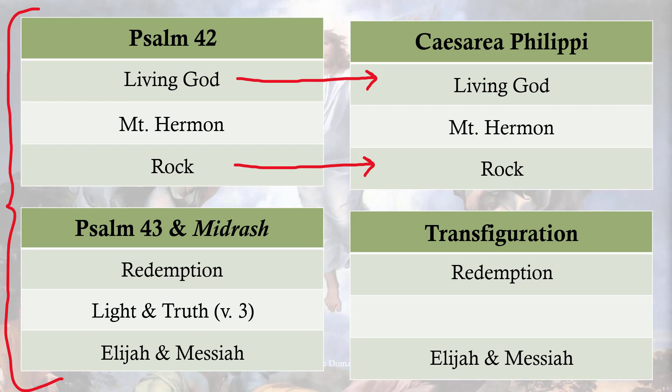All those little allusions — the way this works is: what are the odds? There are no coincidences with God. What are the odds that Psalm 42 has the phrase 'the living God' and so does the Caesarea Philippi event? What are the odds that Psalm 42 mentions the rock, and then you have that exchange about the rock? I just want you to see the depth and breadth of this book we have in front of us. It's just remarkable.